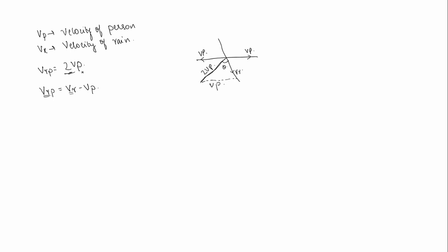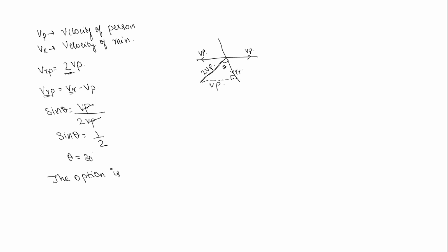It is given over here. So we can take sin theta, which is opposite side divided by hypotenuse — that is velocity of person by 2 times velocity of person, so Vp by 2Vp. Vp and Vp will get cancelled, so sin theta is equal to 1 by 2. Therefore, theta is equal to 30 degrees. So the option is A.